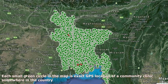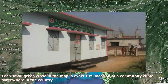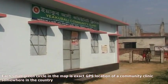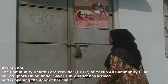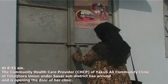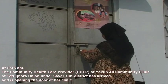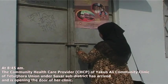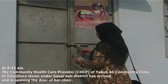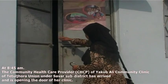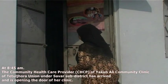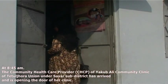Each small green circle in the map is the exact GPS location of a community clinic somewhere in the country. At 8:45am, the community health care provider, CHCP, of Yakub Ali Community Clinic of Tetul Jhora Union under Sabar's sub-district has arrived and is opening the door of her clinic.